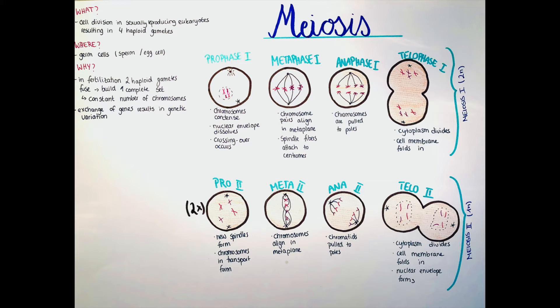Prophase one. The chromosomes condense here and go into this X shape, and also the nuclear envelope dissolves so that the chromosomes can move freely within the cell. Also, crossing over occurs. This leads to genetic variation. I made a drawing of the crossing over to explain it a little bit.